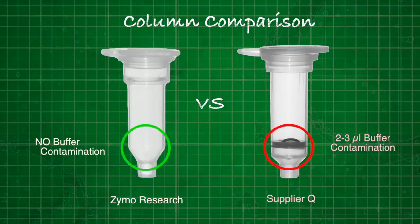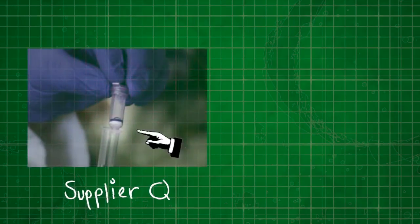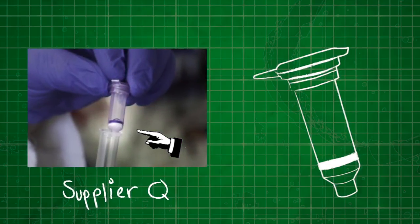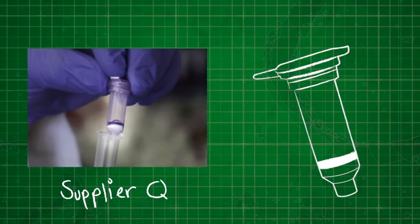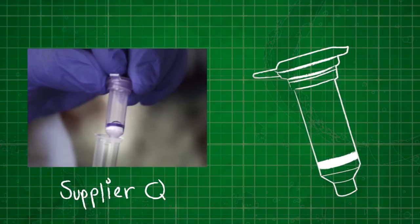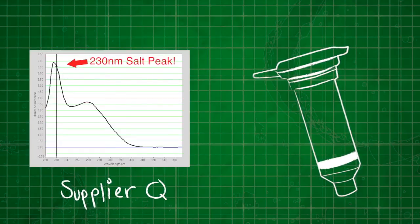Let's examine the column on the right from supplier Q. Do you see the two to three microliters of liquid left after spinning on top of the o-ring? That's two to three microliters of contamination that's going to be eluted out with your precious samples.